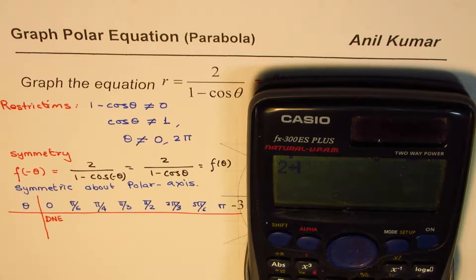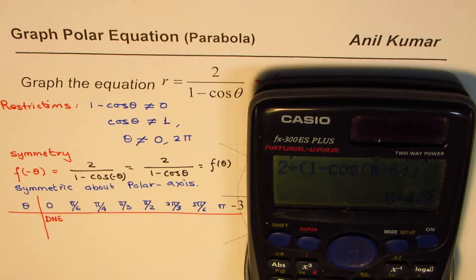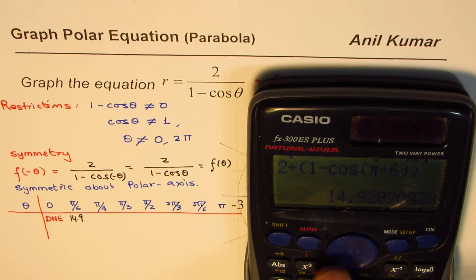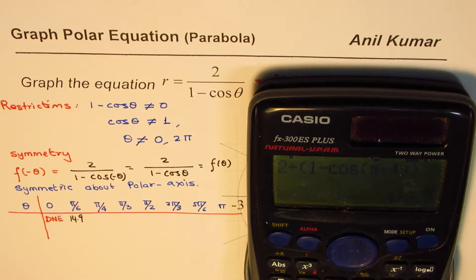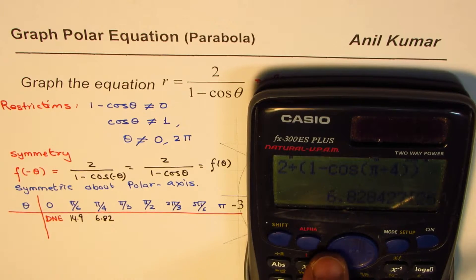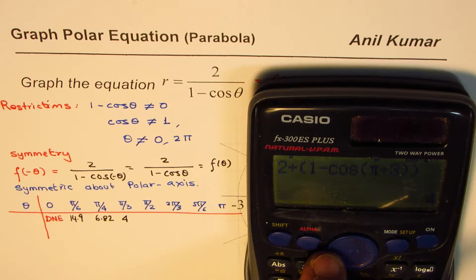For π/6: 2 divided by 1 minus cos(π/6) gives approximately 14.9. For π/4: 2 divided by 1 minus cos(π/4) gives approximately 6.82. For π/3: the result equals 4. For π/2: the result is 2.